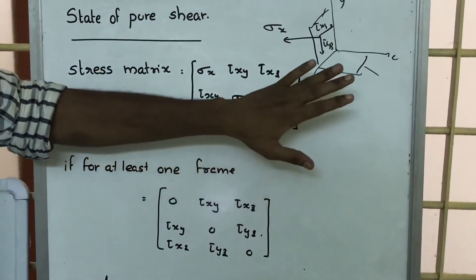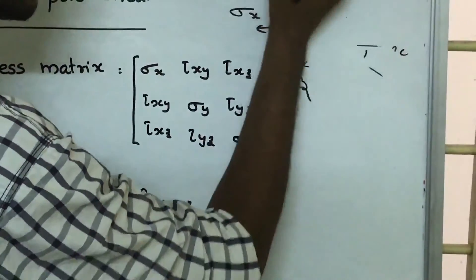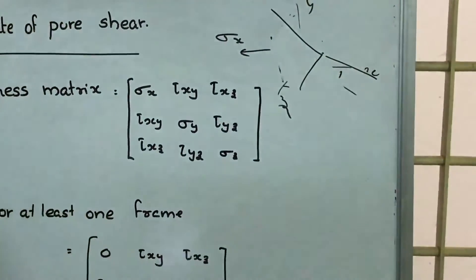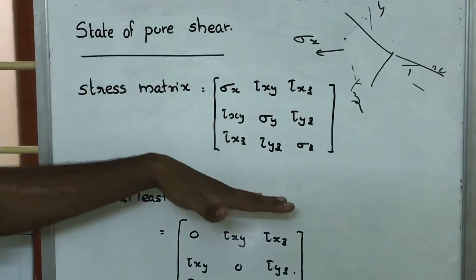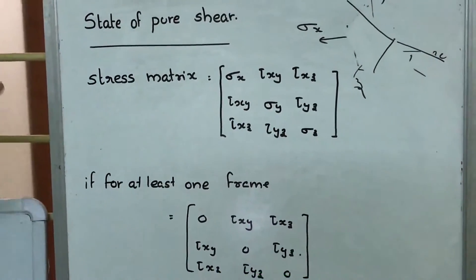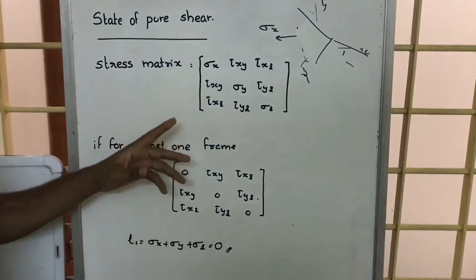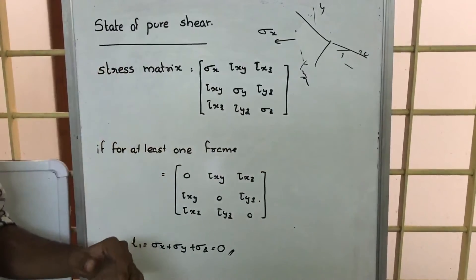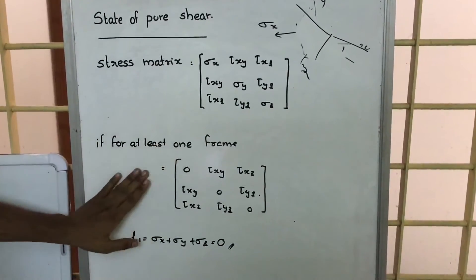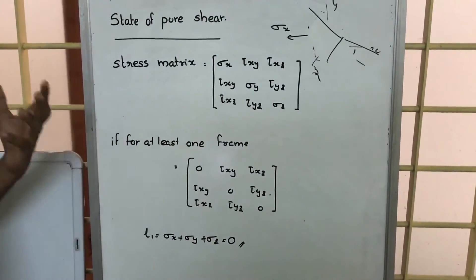Now if we are changing the direction of these three perpendicular planes — that means we are rotating this coordinate system — we now have another set of x, y, z planes. For that set, we again write the stress matrix, which will have another set of sigma x, sigma y, sigma z. For at least one such matrix, if the direct stresses sigma x, sigma y, sigma z are all zero, then we can say that a state of pure shear occurs.